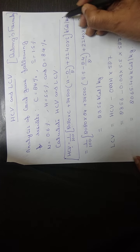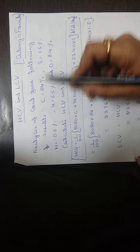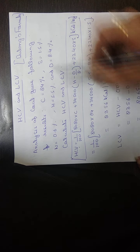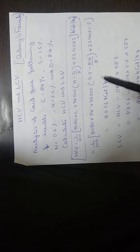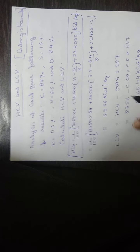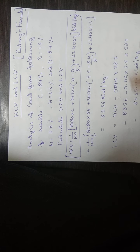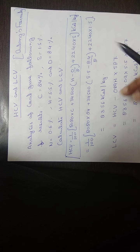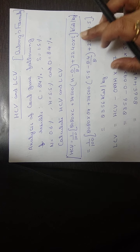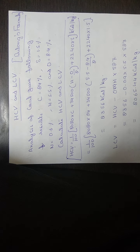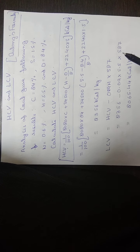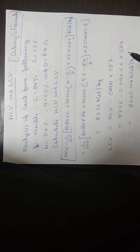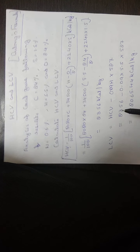In Dulong's formula, the required data are carbon, hydrogen, sulfur, and oxygen. If any one of these four values is missing in a numerical, substitute zero in its place. For example, if sulfur is absent, write zero for sulfur. These are the two methods — Dulong's formula and the bomb calorimeter — for calculating high calorific value and low calorific value.